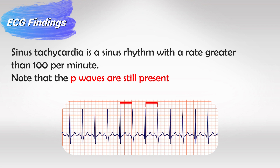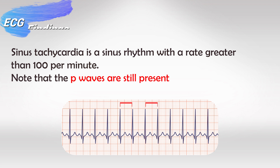In the ECG you will see that there are many QRS complexes that are all identical — all the waves look exactly the same with no differences. However, they are closer together, which indicates a faster heartbeat. It is very important to know that the P wave is still present.